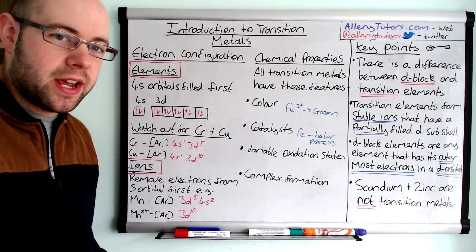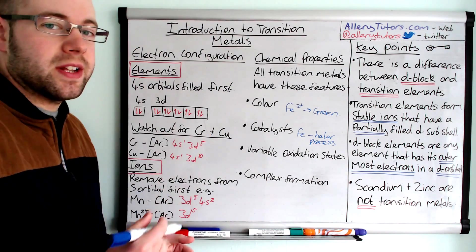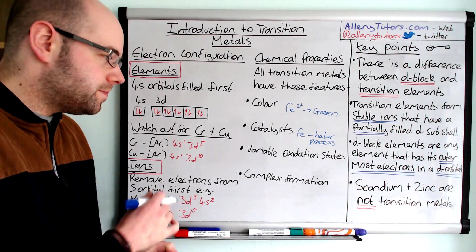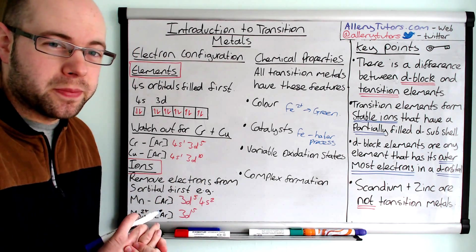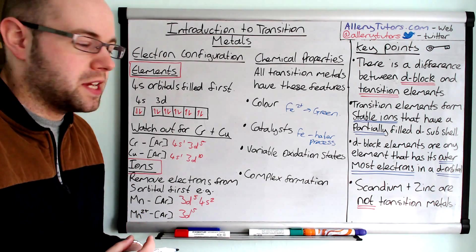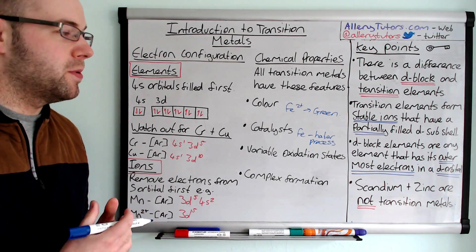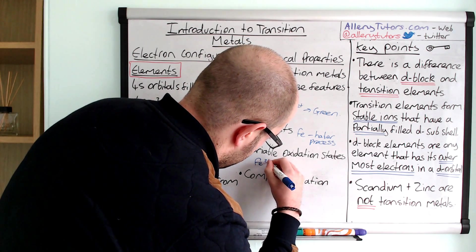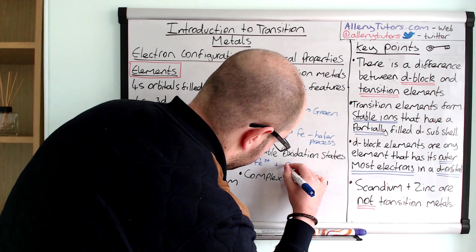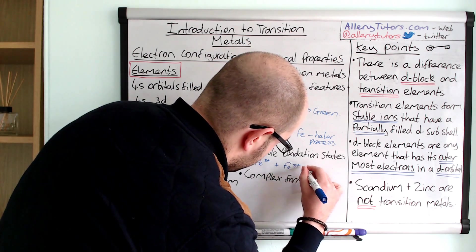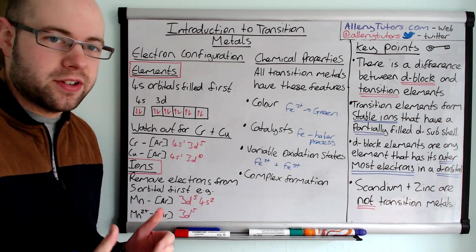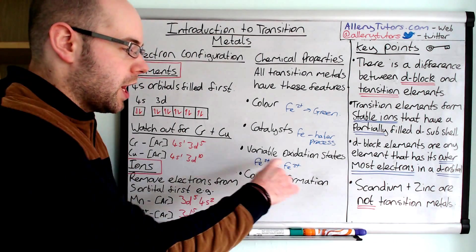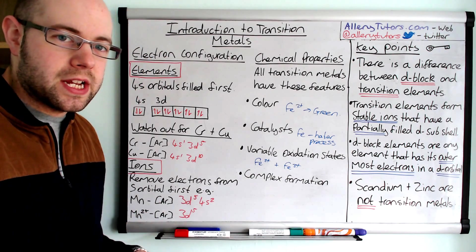Variable oxidation states. Again, the word transition means they can vary the oxidation states, and that makes them useful for potential reducing and oxidising agents as well. So, for example, you could have Fe2+, and you can have Fe3+. So, there's just one example of a transition metal that has a different, same element, so same number of protons, but it's got a different oxidation state. It's got a different number of electrons in the outer shell.